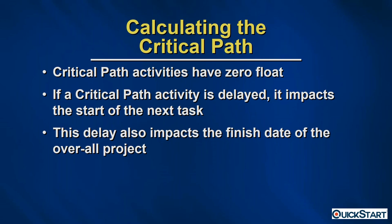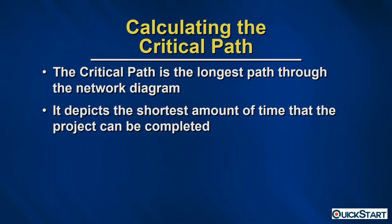More importantly, calculating float helps us identify the tasks on the critical path. Critical path activities have zero float. The reason critical path tasks are so important is that any task on the critical path that gets delayed will impact the start of the next task and the overall project finish date. The critical path is the longest path through your network diagram and represents the shortest time in which your project could be completed.